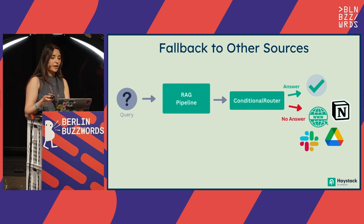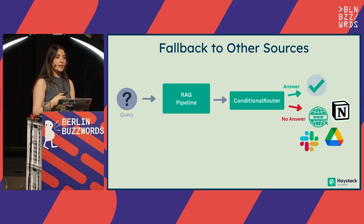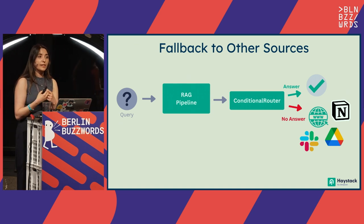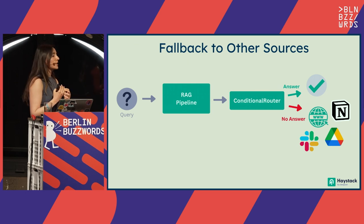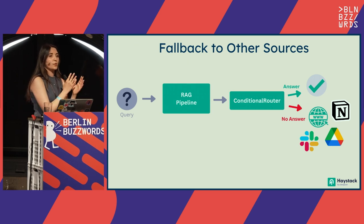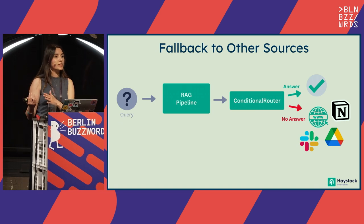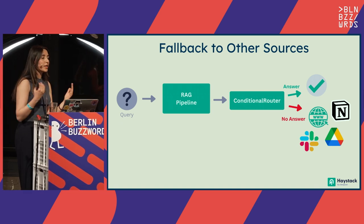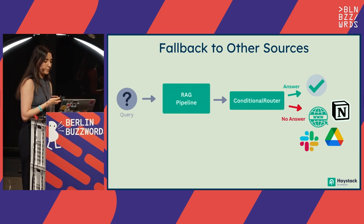Of course, your fallback branch doesn't have to be web. As an alternative source, you can use Notion, Google Drive, or maybe you don't want another source but just want a Slack notification. You can log it into your system so that you're aware users tried this query but couldn't find an answer. Maybe then you can use this information to evaluate your pipeline — this is also very valuable to implement in your system.